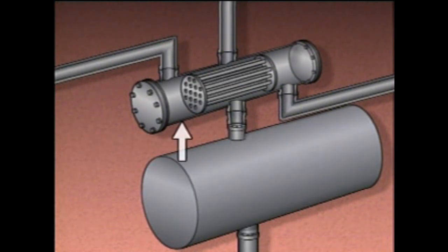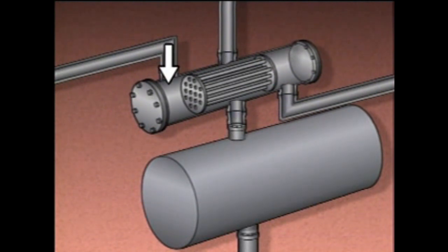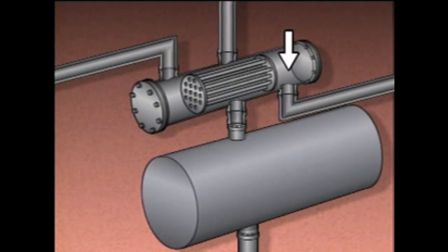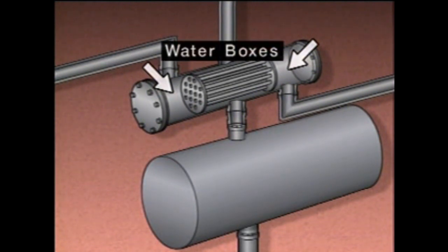This condenser has a shell, tubes, tube sheets, a vapor inlet, a cooling water inlet called a head, a distillate outlet, a cooling water outlet head, and a receiver. On this type of condenser, the cooling water heads may also be referred to as water boxes.